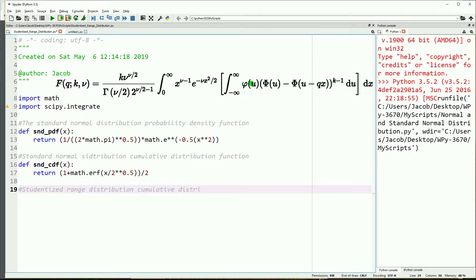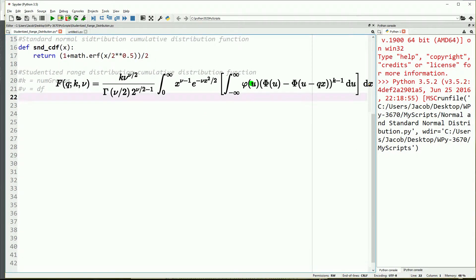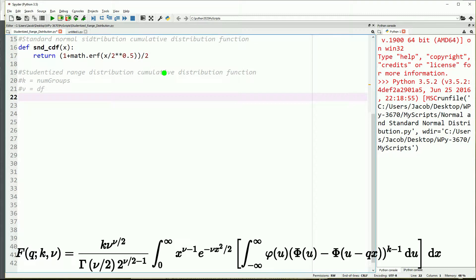Let's go ahead and start on the studentized range distribution cumulative distribution function. Note that in the formula k is number of groups and v is the degrees of freedom. We're going to start off by defining just the main function itself and then from there we're going to kind of work backwards.